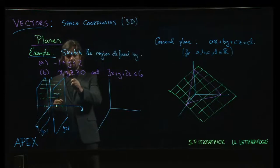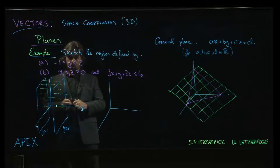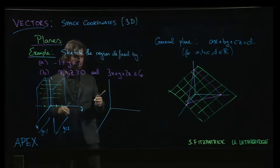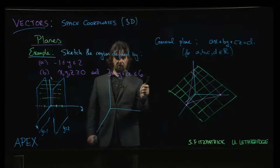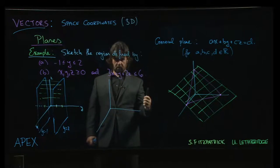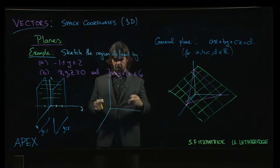x equals 0, y equals 0, z equals 0. The three coordinate planes. Plus this fourth plane here. 3x plus 2y, 3x plus y plus 2z equals 6. And we want the region that's bounded by all of those planes.